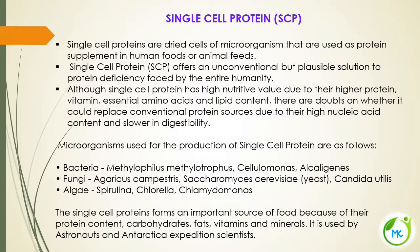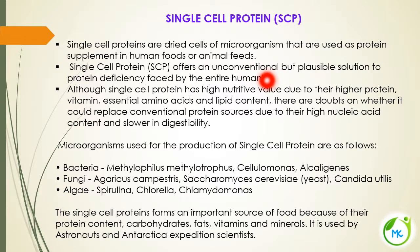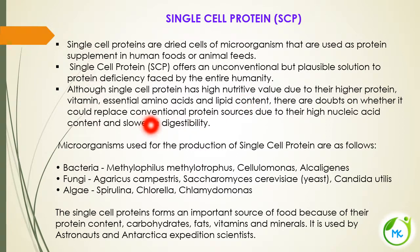The next topic is single cell protein — a very important topic. Single cell proteins are dried cells of microorganisms and SCP is used as a protein supplement in human food or animal feed. SCP offers an unconventional but plausible solution to the protein deficiency humans are facing. Single cell protein has high nutritive value because of its higher protein content, more vitamins, essential amino acids and lipids. However, due to its high nucleic acid content and slower digestibility, people hesitate to use SCP.